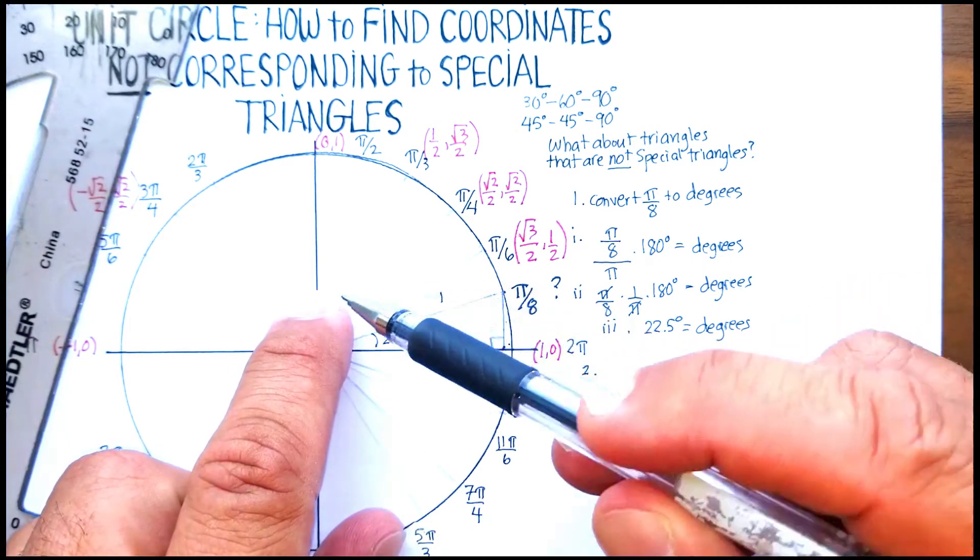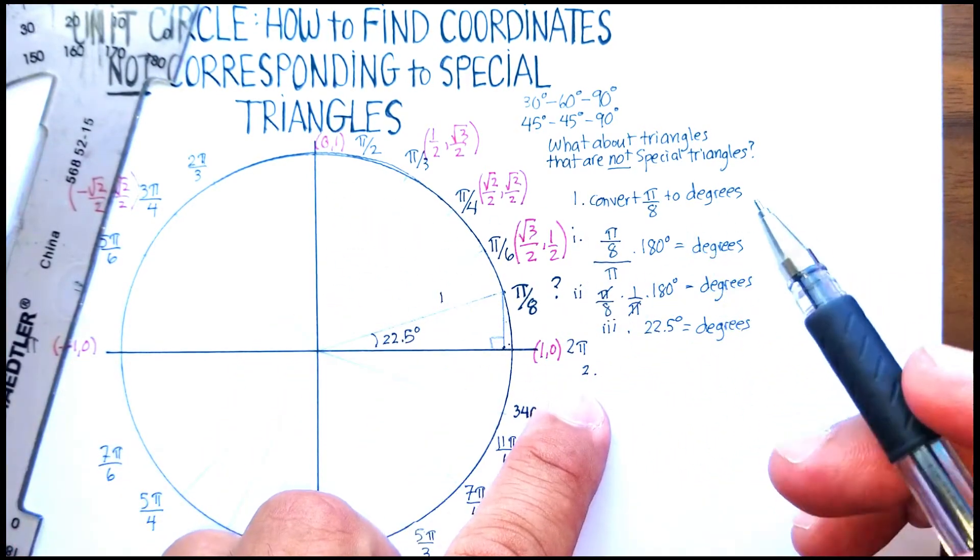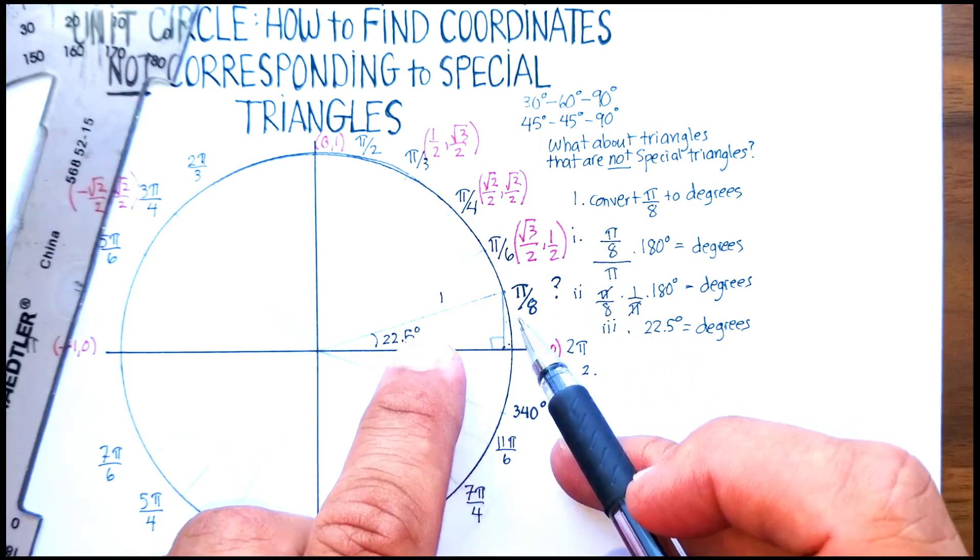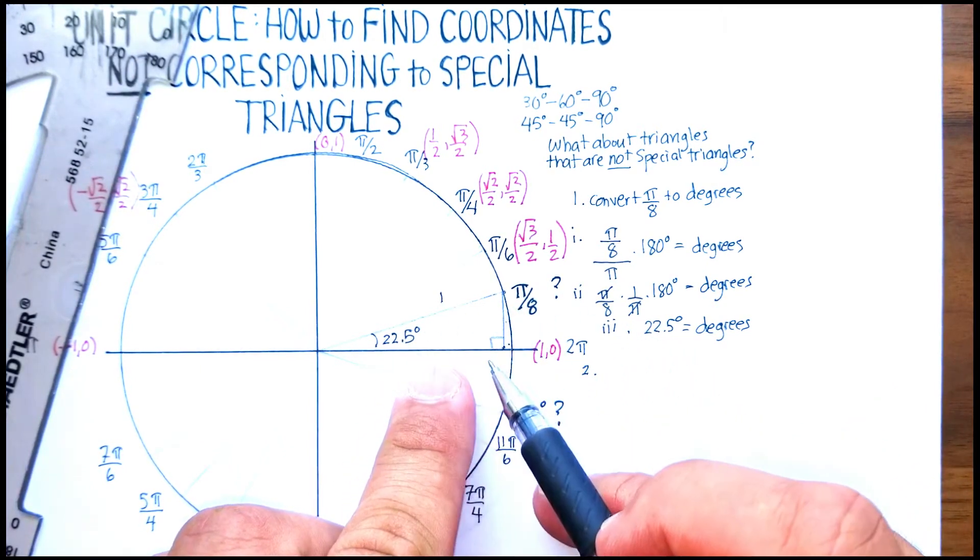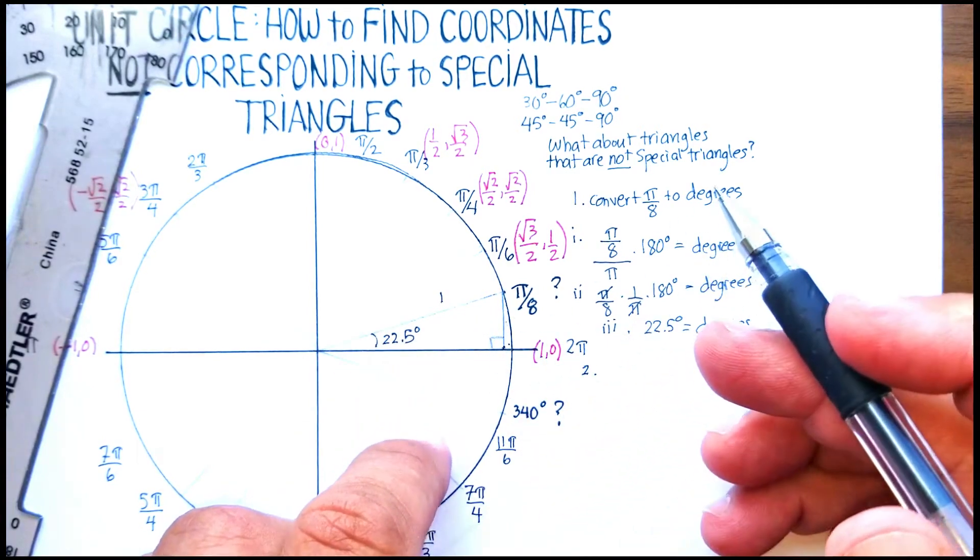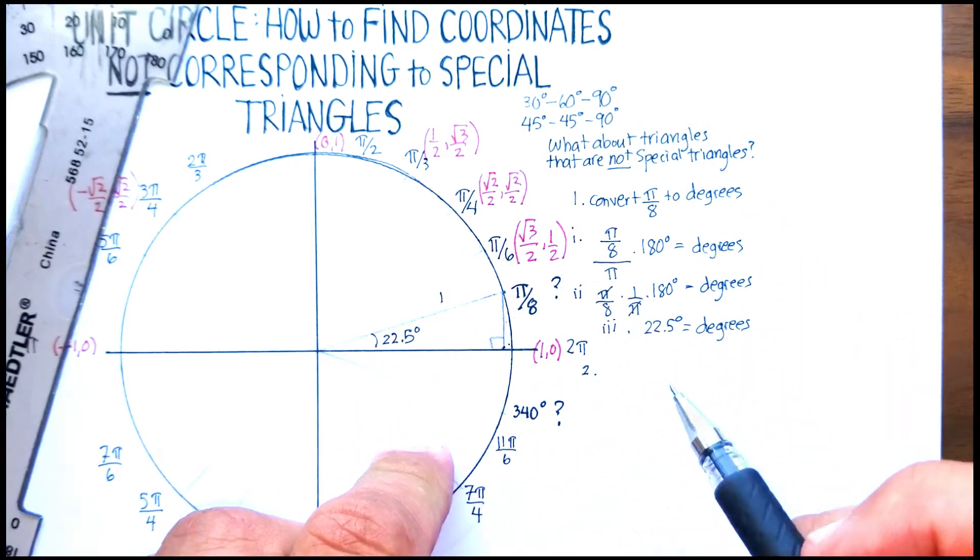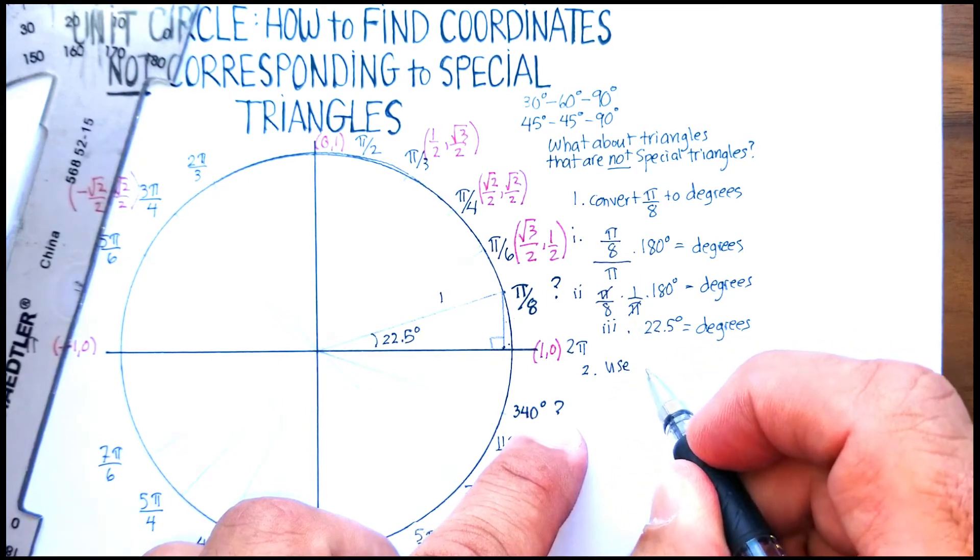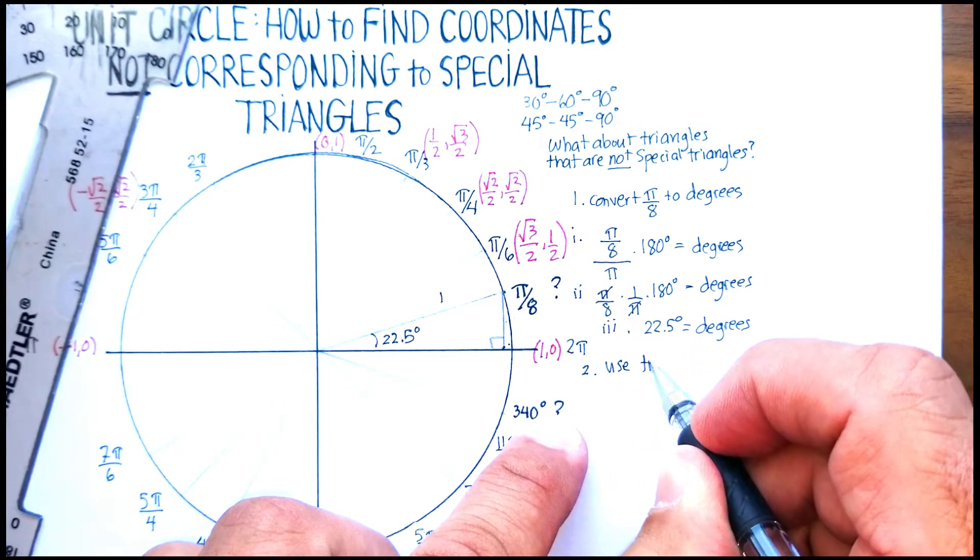Now how do we find the sides of a triangle that's a right triangle if we know the degrees in the triangle? And this is where we're going to have to use trig. Use trig functions to find...